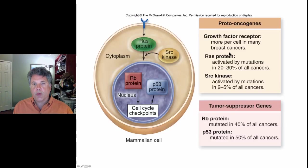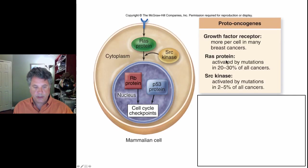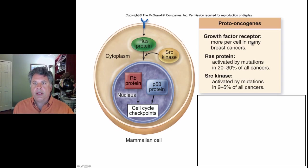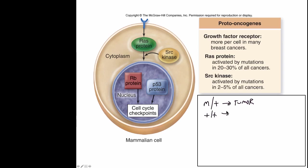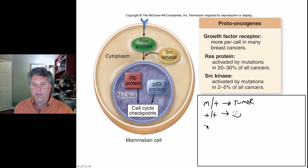Proto-oncogenes show the following genetic behavior: if you have a mutant copy of a proto-oncogene, it doesn't matter if you have a normal copy of the gene around, because the gene is inappropriately active and can lead to tumor formation. If you have two normal copies, you're fine — no cancer. If you have two mutant copies, that's bad news too, leading to a tumor as well.